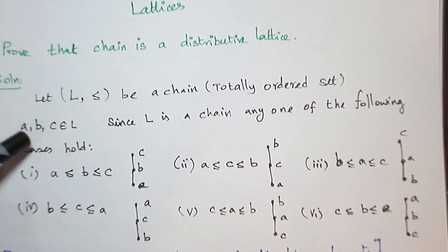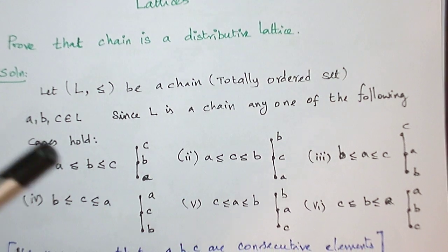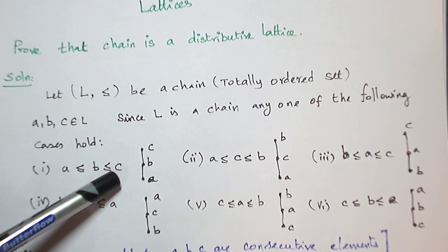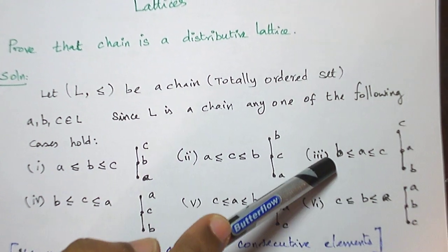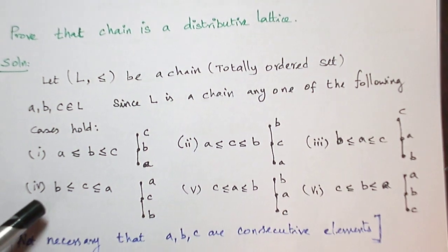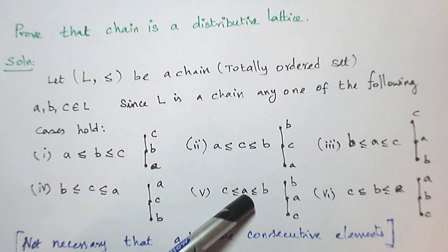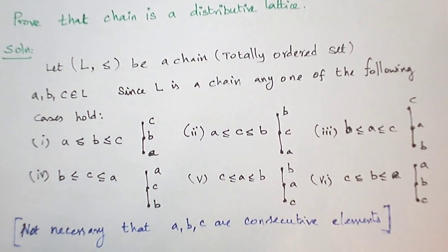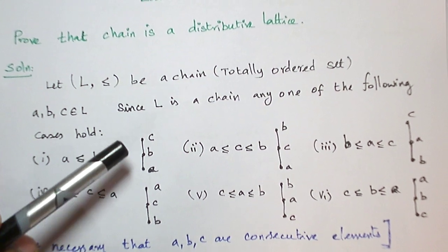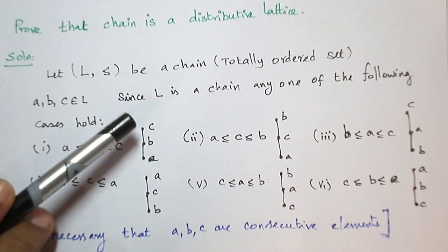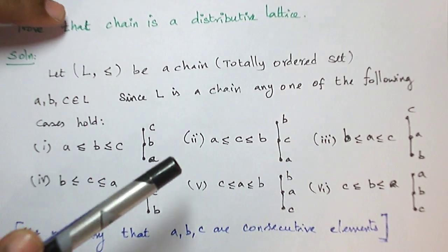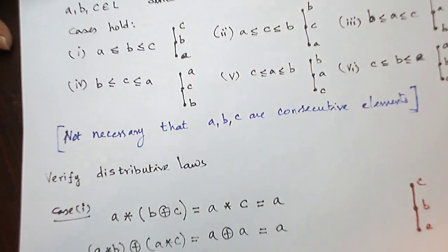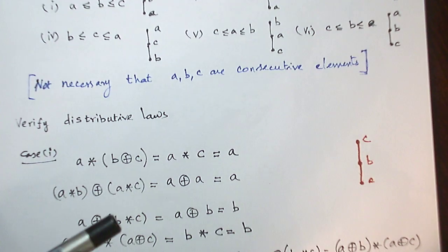So I take three elements A, B, C. Any two elements if we take, they are comparable. So any one of these six cases are possible: A≤B≤C, A≤C≤B, B≤A≤C, B≤C≤A, C≤A≤B, or C≤B≤A. Don't think that they are consecutive elements — there may be some elements between A and B or B and C, but we are only discussing these three. Now let us verify the distributive lattice property for all six possible cases.